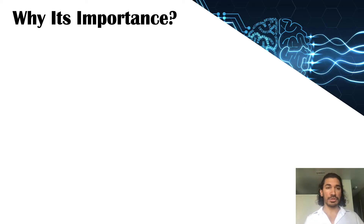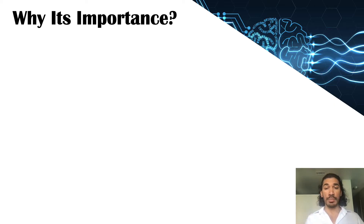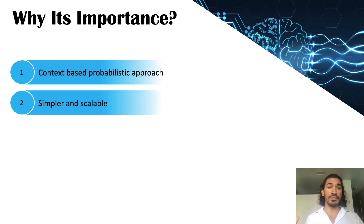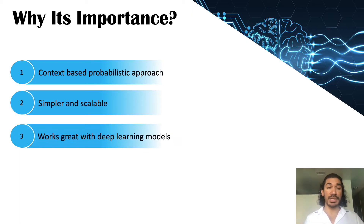So why do we even care about learning Word2Vec? There are other techniques like count vectorizer and TF-IDF that give numerical representations of words based on frequency — the number of times a word occurs in a sentence — or based on the rareness of the word. But we need to learn Word2Vec because it uses a context-based probability approach, giving the probability of a word based on its surrounding words and where it appears in the sentence. It is also very simple, scalable, uses only one hidden layer, very fast, and works great with deep learning techniques like NLP and neural networks.